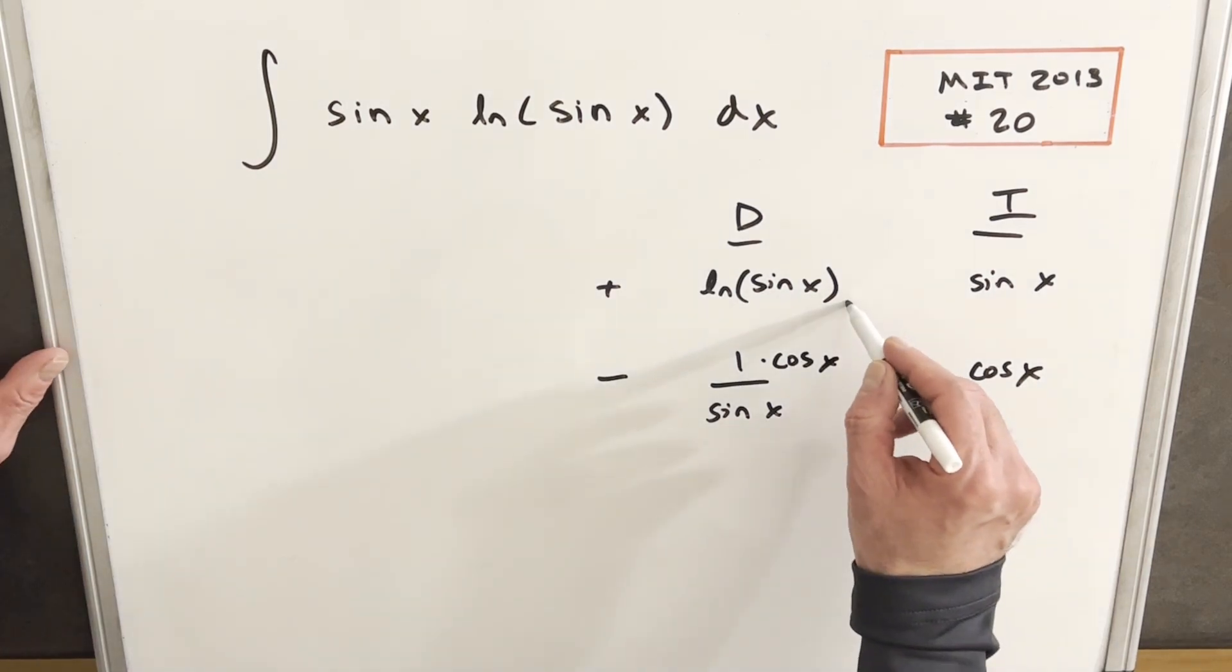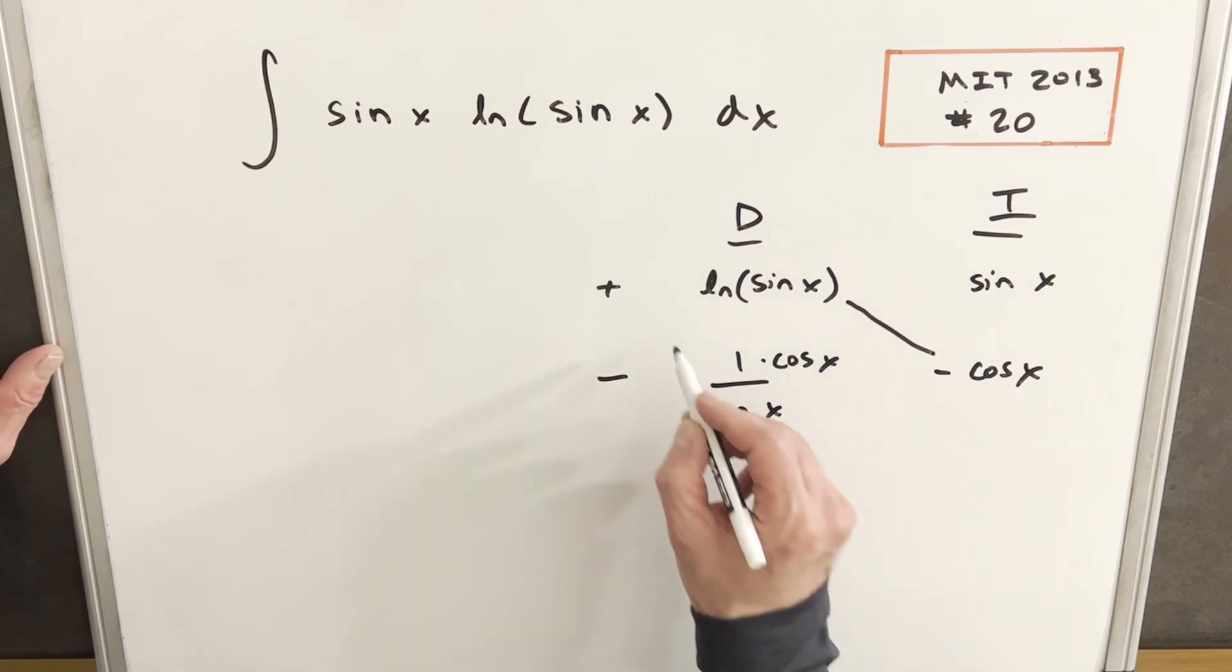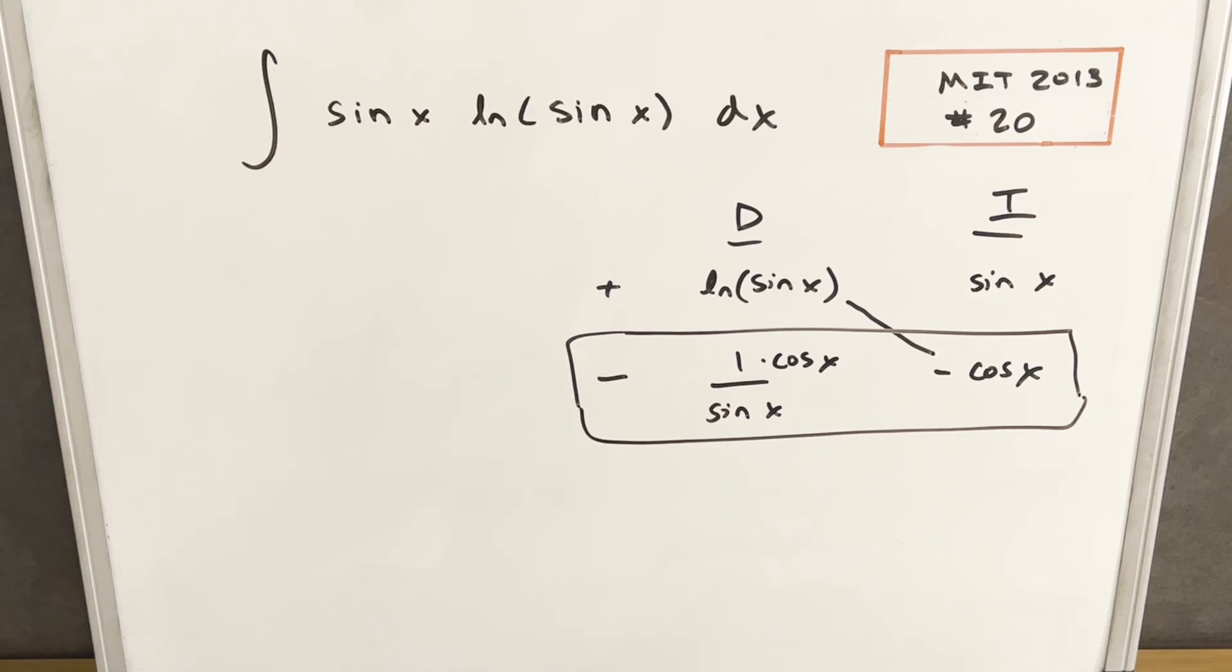And what happens is the diagonals will be part of our answer. So we have that part right there. But we need to look at this line, this row right here, as another integral. So let's break that out separately.